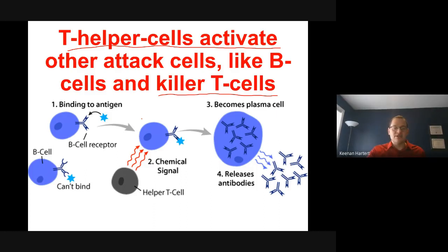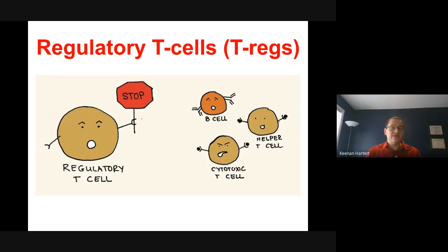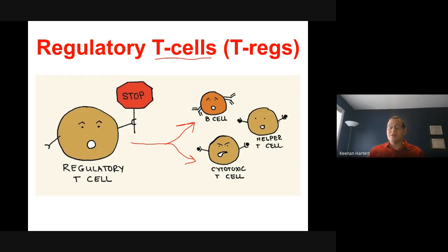Regulatory T cells' whole role is to say stop — the infection's over, stop killing this area of the body. Because you do need a stop signal. One of the main ways that pathogens can avoid getting killed is by sending fake signals to Tregs, causing them to show up and stop all the immune cells from killing the pathogen. They're not the smartest things and are pretty easily manipulated. But you don't want your immune system going crazy all the time, so it's good that there is a stop signal.